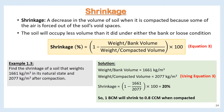Example 1.3: Find the shrinkage of a soil that weighs 1,661 kg/m³ in its natural state and 2,077 kg/m³ after compaction. Weight per bank volume is 1,661 kg/m³ and weight per compacted volume is 2,077 kg/m³. Using equation 3: 1 minus 1,661 divided by 2,077, multiplied by 100, equals 20%. So 1 BCM will shrink to 0.8 CCM when compacted, a decrease of 20%.